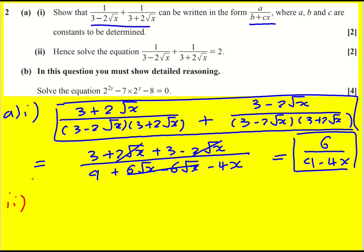Hence solve this equal to 2. So using part 1 you can instead just solve 6 over 9 minus 4x equals 2.